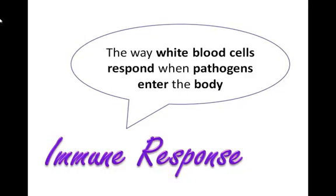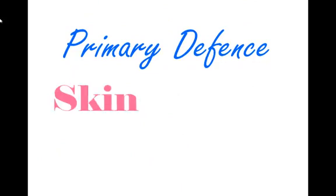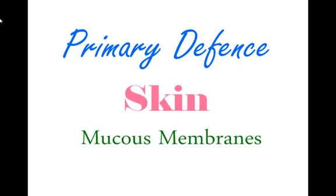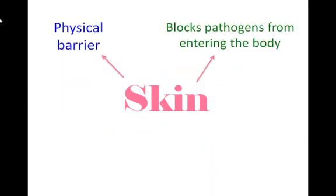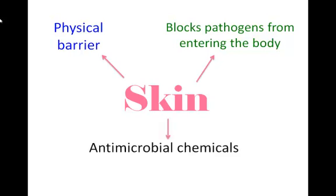So surely the body has ways of preventing the pathogens from entering the body in the first place? Yes, that's called the primary defence. It includes the skin and mucous membranes. Let's start with the skin. The skin is the main primary defence — it acts as a physical barrier that blocks pathogens from entering the body. The skin also produces chemicals that are antimicrobial and can lower pH, thus slowing down the growth of pathogens.